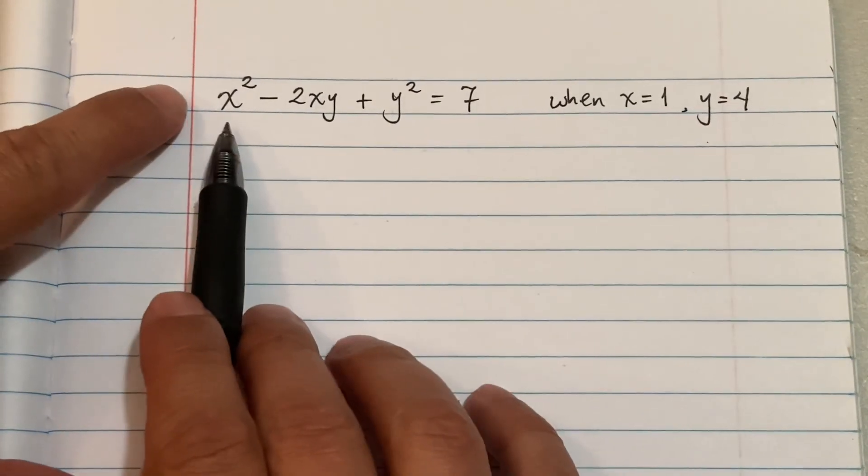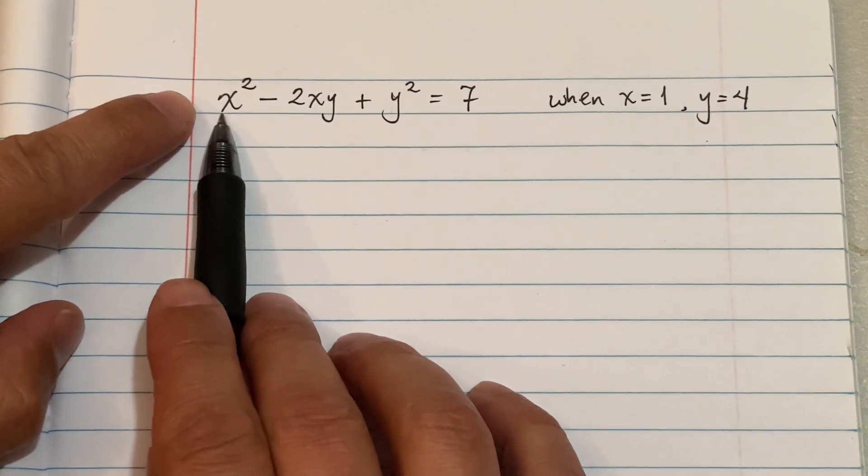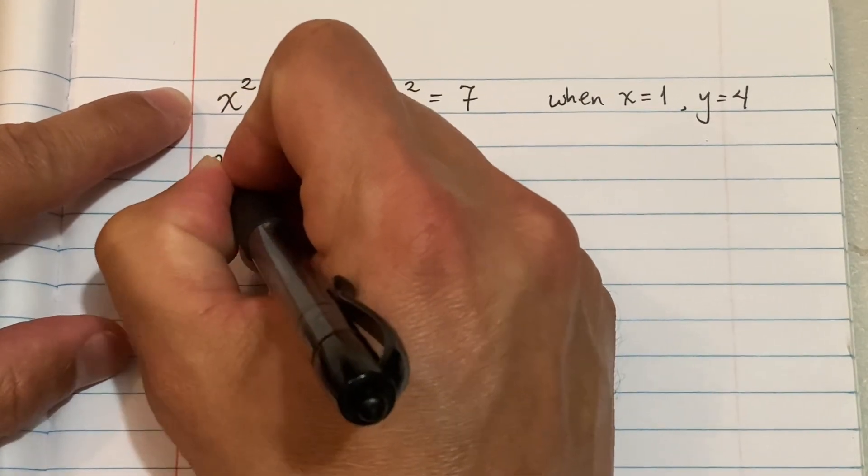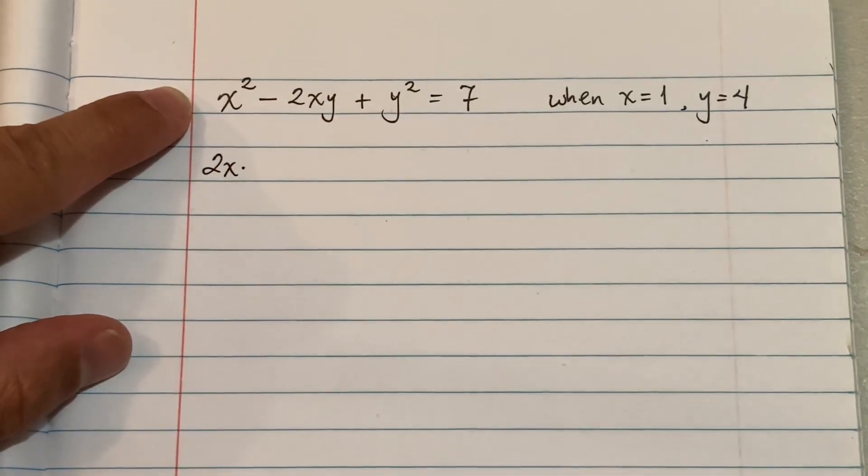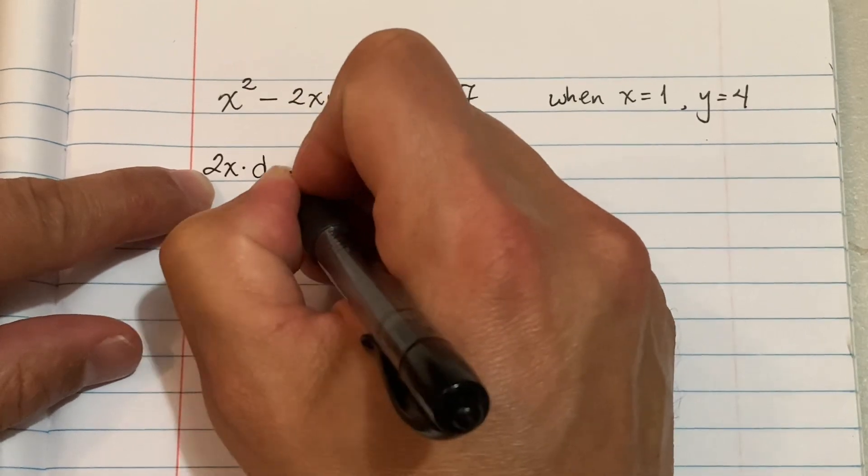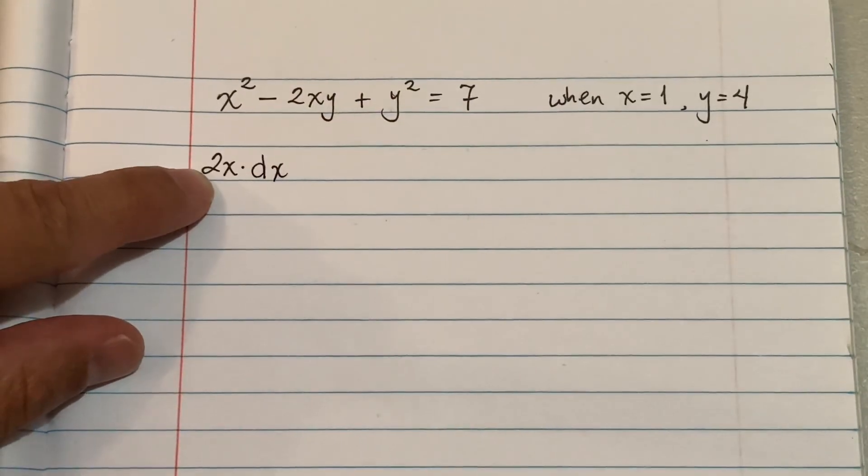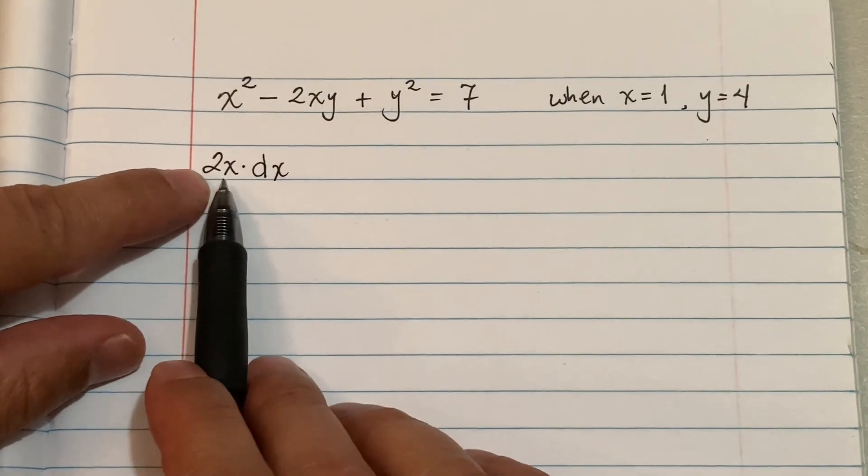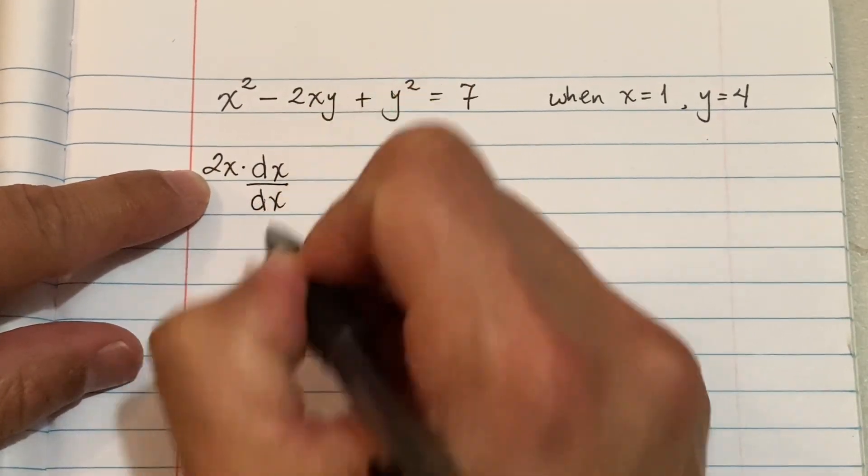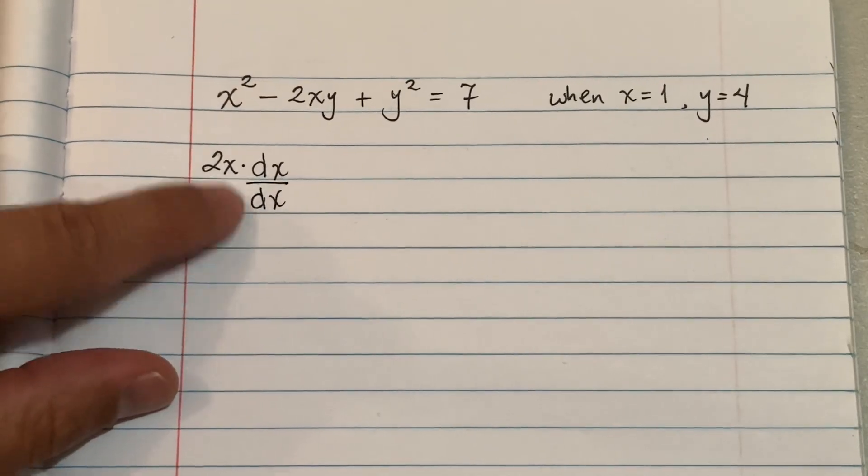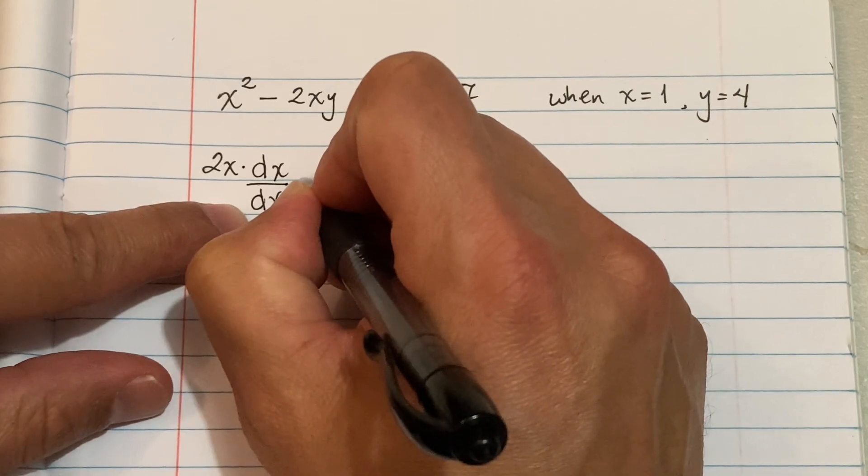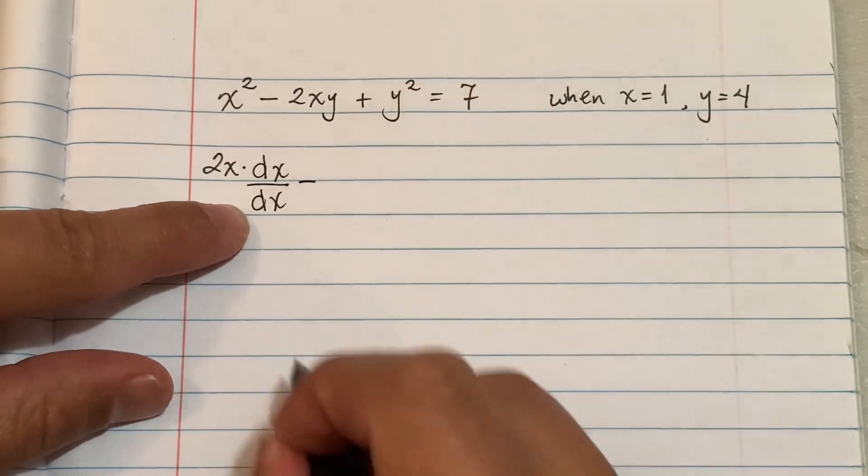The derivative of X squared you guys know is 2X. Now we're gonna take the derivative of X with respect to this guy, DX, and that's how it becomes a one. So we're taking the derivative with respect to X.